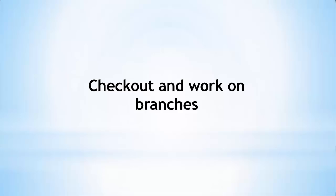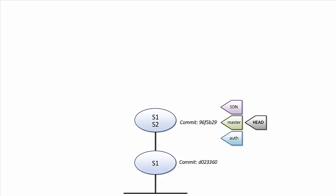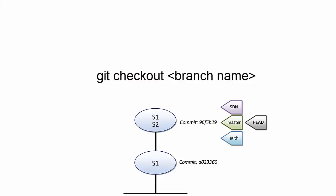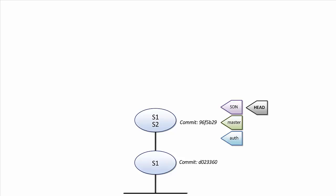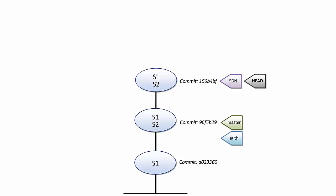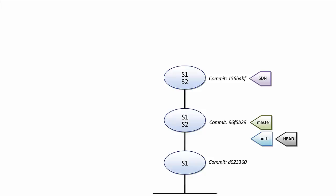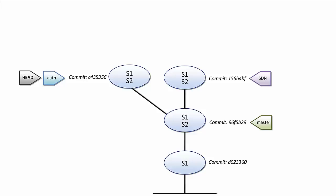We have our three branches: master, SDN, and auth. We check out the SDN branch with git checkout SDN, which moves the head pointer to SDN. While on that branch we will edit S1, then stage and commit that change — only the SDN branch will move up to the new commit. After that, we check out the auth branch with git checkout auth, make a different change, stage and commit it. This creates a new commit where only auth moves forward. We end up with three branches pointing to different commits.